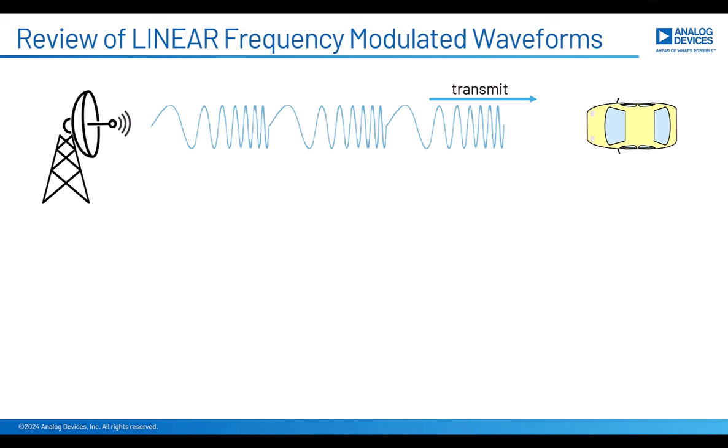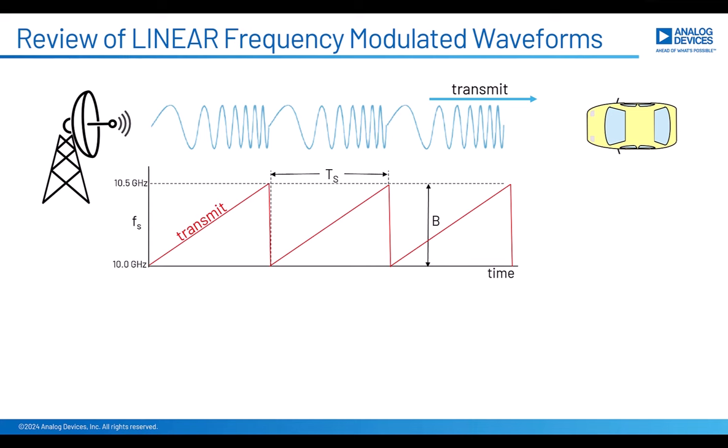Our linearly frequency modulated waveform looks something like this. This waveform shown is in the time domain, and it's a bit of an exaggerated view of the waveform versus time. You can see that the frequency of the waveform changes over time, and then it repeats. It's more helpful to draw out that frequency versus time. Here I've drawn that out in red, and now you can see that sawtooth shape we talked about in the last video. This frequency chirp just repeats over and over.